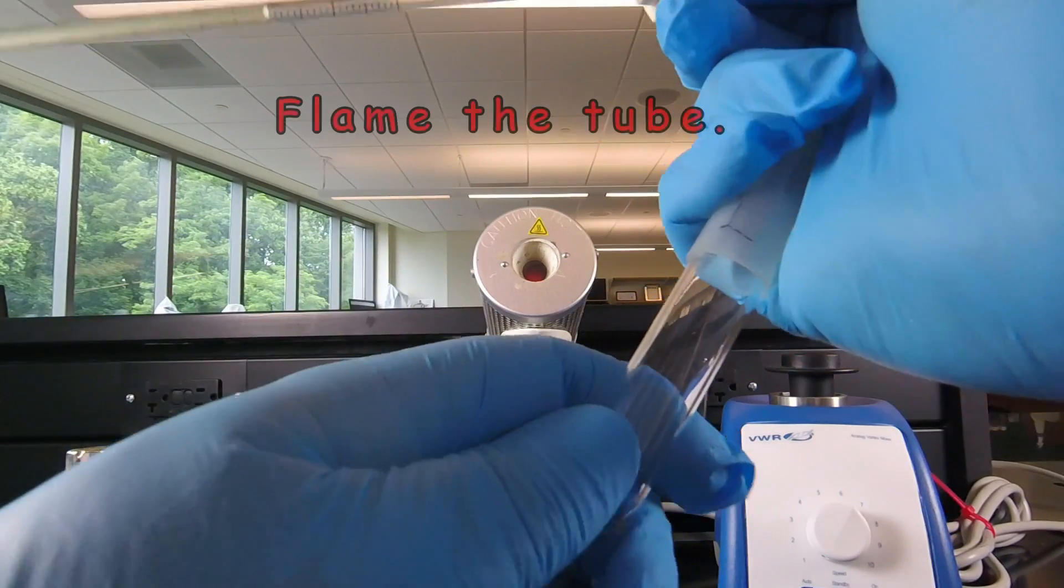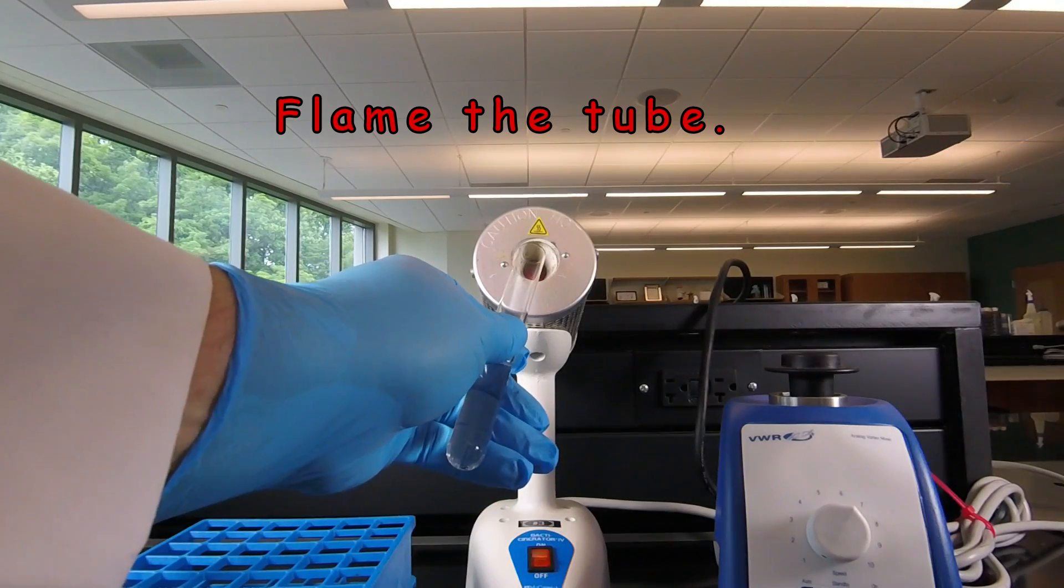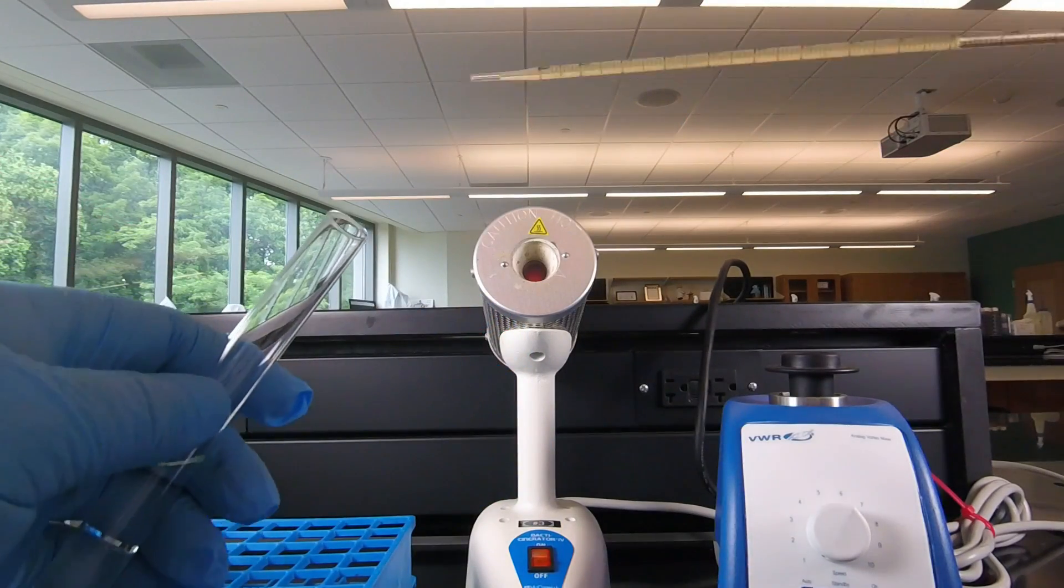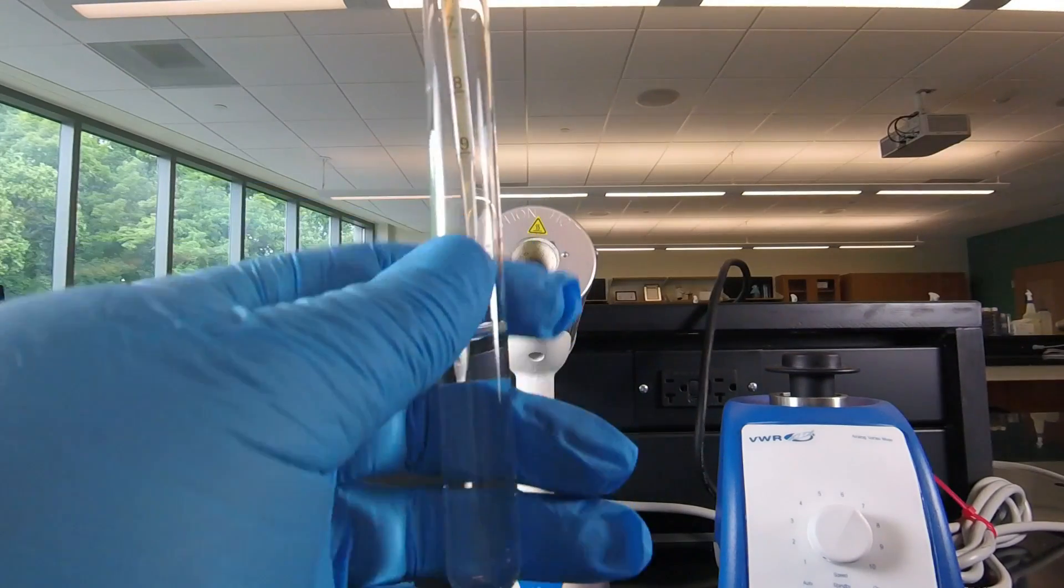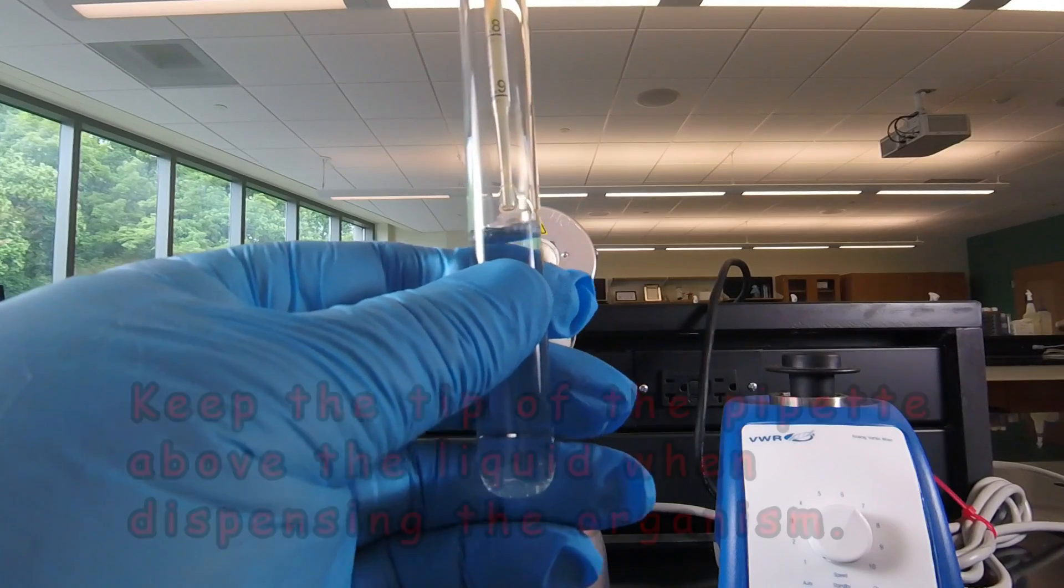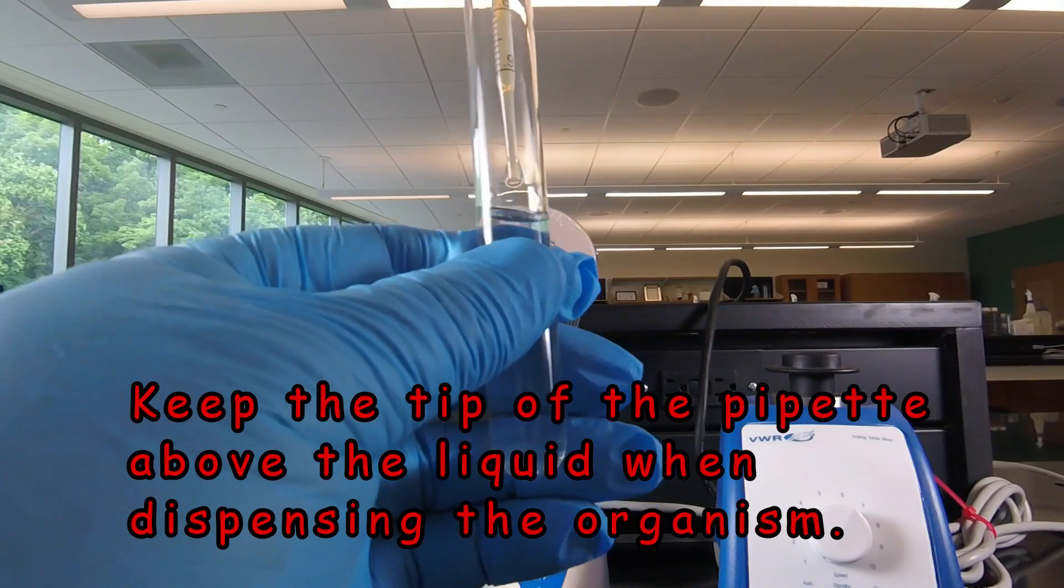So again you would remove the cap of the tube, you're going to dispense the bacteria in, flame the tube, then we put the tip of the pipet in the tube. And in this case now we want to be able to see the bottom of the pipet when we're dispensing.